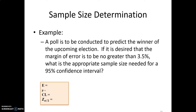The example we'll work on: a poll is to be conducted to predict the winner of the upcoming election. If it's desired that the margin of error is no greater than 3.5% — or 0.035 as a decimal — what is the appropriate sample size needed for a 95% confidence interval? For 95% confidence, the Z value is 1.96. There is no value for p given, and nothing in the question references a previous study or pilot study, so we use p equal to 0.5.